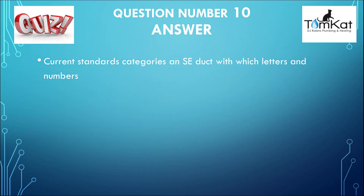And now the final question — the answer to number 10: current standards categorise an SE duct with which letters and numbers? The answer was C3/21. That is the answer to the last question, number 10.